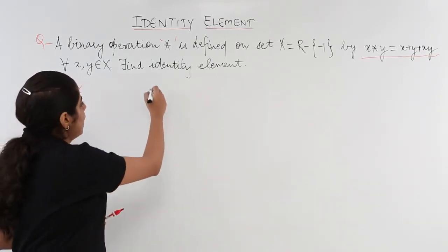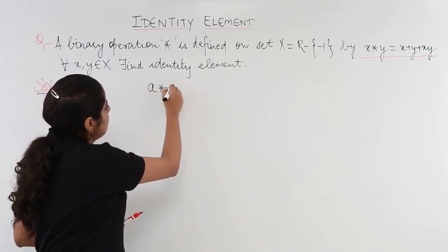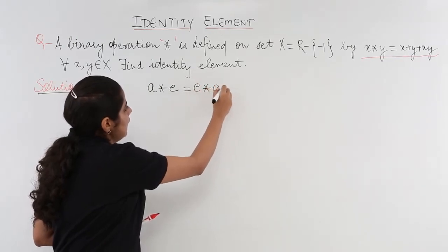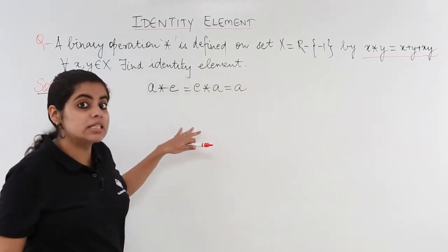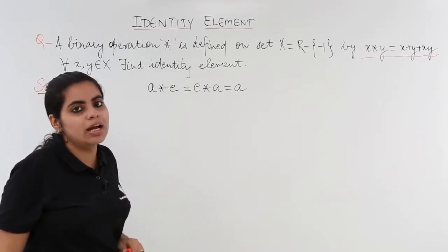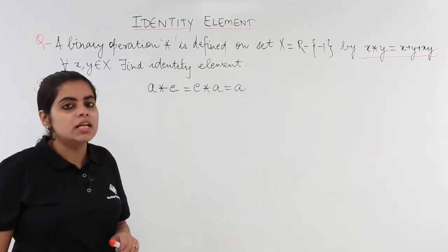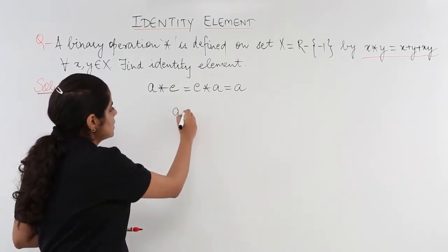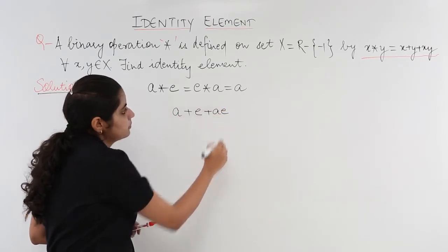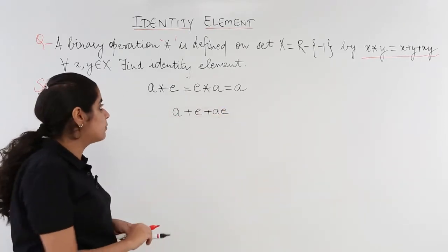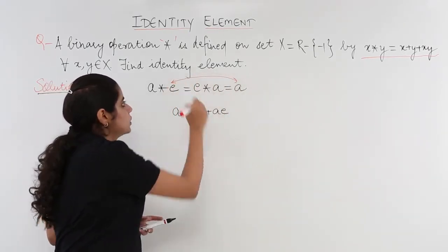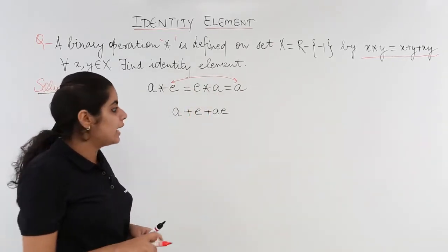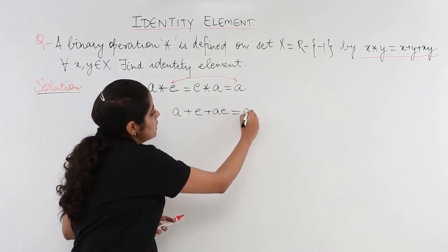By the definition of identity element, we know that a star e equals e star a equals a. If this is the case, I have e as my identity element. Now what is x star y equal to? It is nothing but x plus y plus xy. We have applied the binary operation on first and third. You can also apply on second and third. And equals a remains as it is.